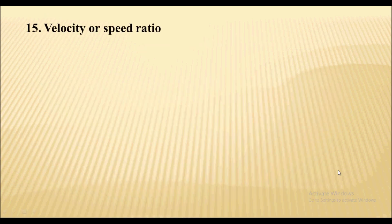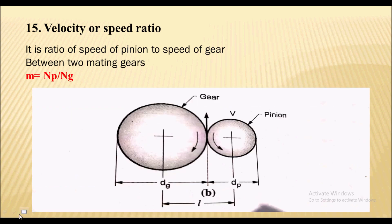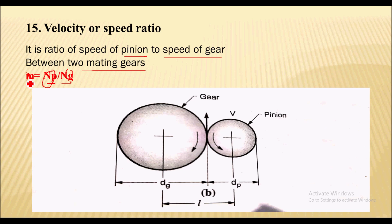Next is the velocity or speed ratio, a very important term. Velocity ratio is the ratio of the speed of the pinion to the speed of the gear between two mating gears. It is given by Vr = Np / Ng, where Np is the speed of the pinion (smaller gear) and Ng is the speed of the gear (larger wheel).